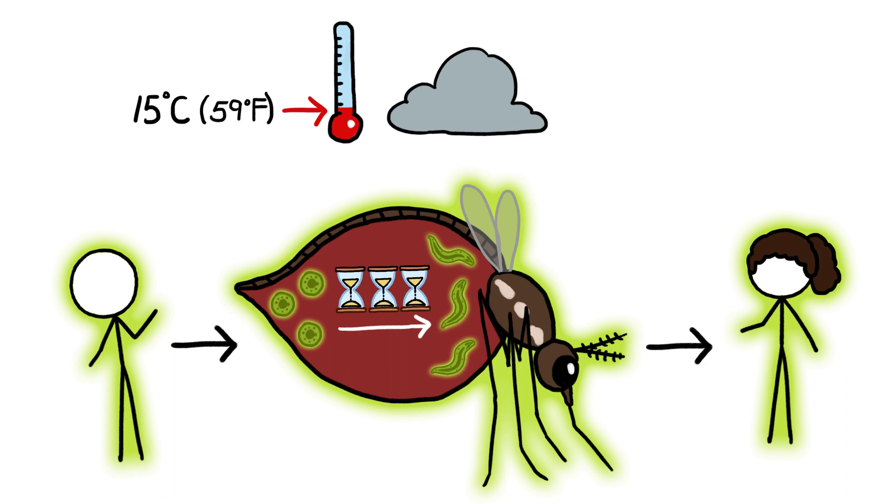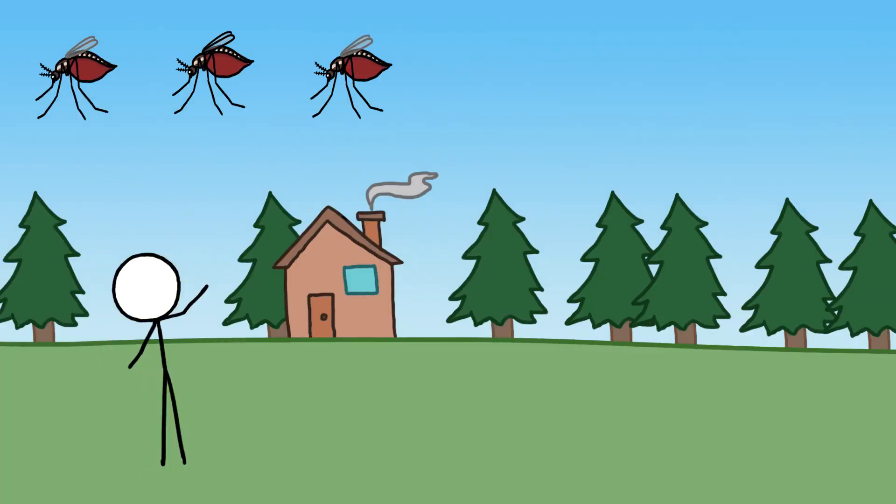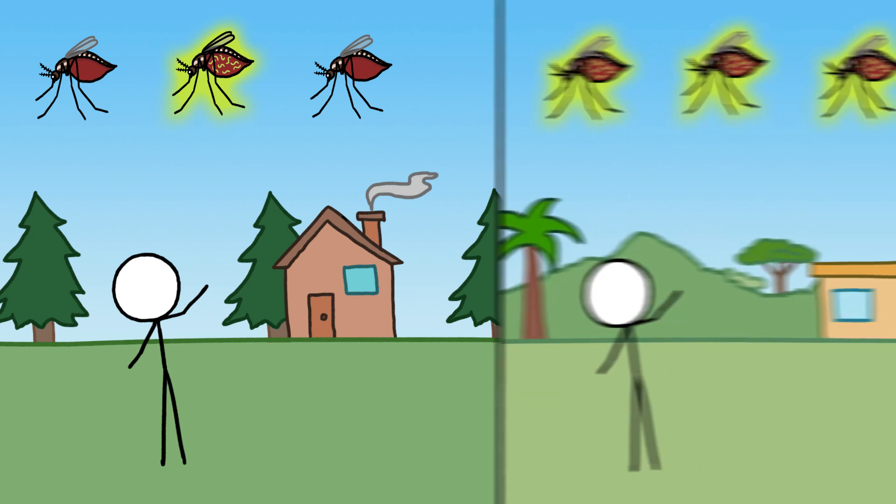And under about 15 degrees Celsius, it can't reach its infectious stage at all. So in temperate climates, fewer mosquitoes end up carrying the infectious form of the parasite than in the tropics.